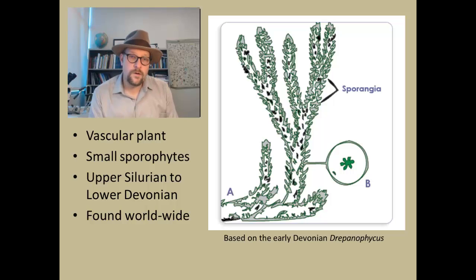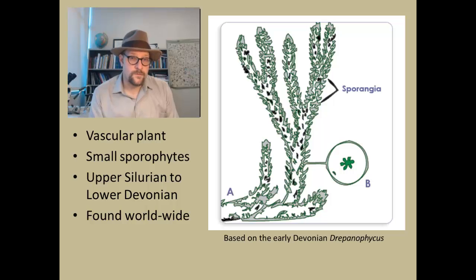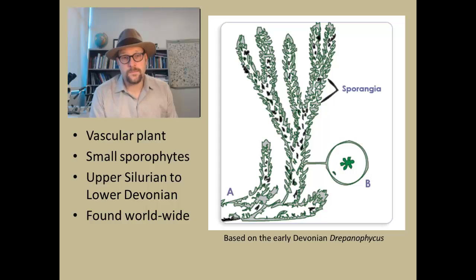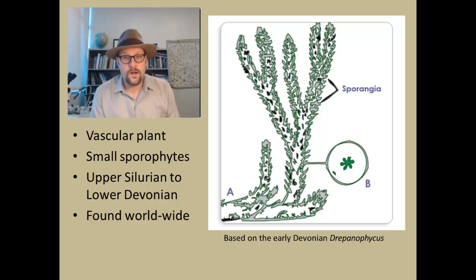Baragwanathia has really small sporophytes distributed along these columns as they grow, and it is known from the Upper Silurian to Lower Devonian, dated around 430 million years ago. So not as early as those Cambrian fossils, but we're moving into the Silurian and starting to see more plants that really resemble early land plants. It's found pretty much worldwide, and it was advantageous to produce spores, allowing these plants to grow and colonize.